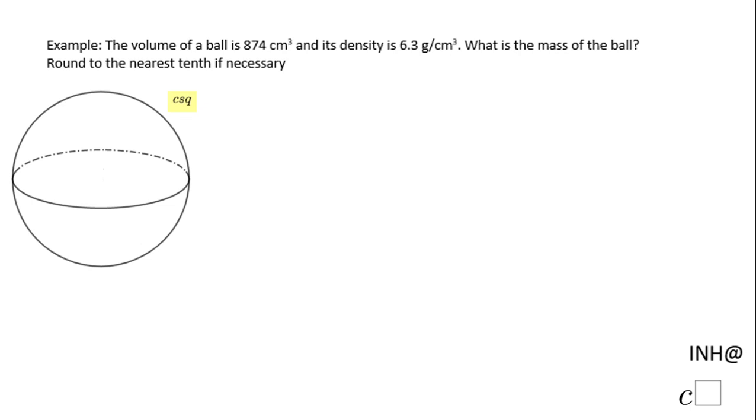Welcome or come back, I Need Help at C Square. In this example we have a ball, a sphere. We have here the volume of this ball, it's 874 cubic centimeters, and the density, for which I'm going to use the letter D, is 6.3 grams per cubic centimeter, and we are asked to find the mass.